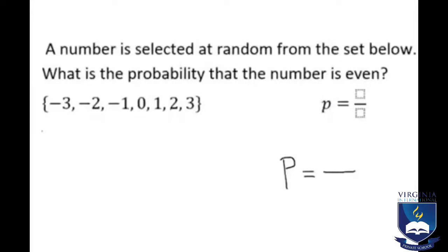A number is selected at random from the set below. What is the probability that the number is even? The set is {-3, -2, -1, 0, 1, 2, 3}. To find the probability that the number is even, step one: count how many even numbers. -2, 0, and 2 are the even numbers, so we have 3 even numbers. And we have to count how many numbers we have total—we have 7 numbers.